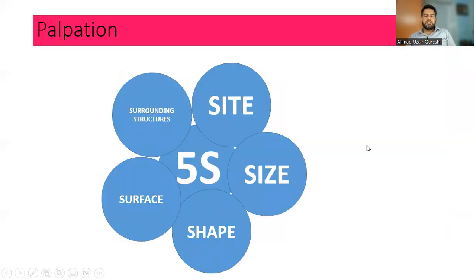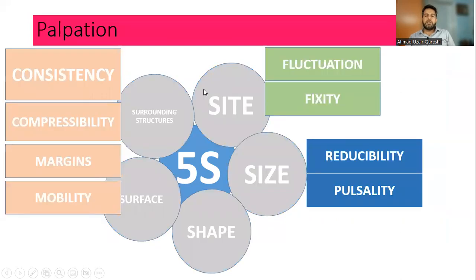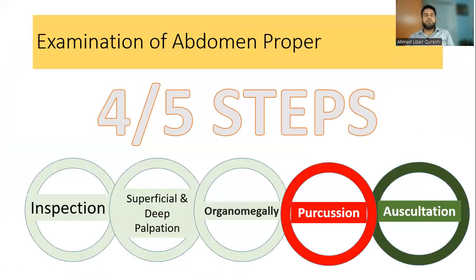If you find an abdominal swelling, a separate detailed examination of that swelling is required. On inspection and palpation, use the five S's: site, size, shape, surface, and surrounding structures. Additional palpation findings include consistency, compressibility, margins, mobility, fluctuation, fixity to underlying structures, axis of movement, reducibility, and pulsatility.